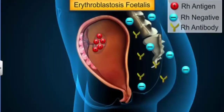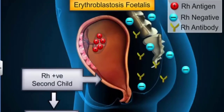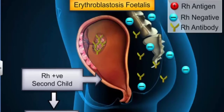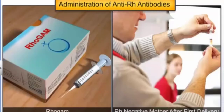The problem occurs during the second pregnancy. The Rh antibodies from the mother's blood cross the placenta and destroy the fetal RBCs, resulting in severe anemia and jaundice, which can lead to the death of the fetus. Erythroblastosis fetalis can be prevented by injecting anti-Rh antibodies, commonly called RhoGAM, into the mother's blood immediately after her first delivery.